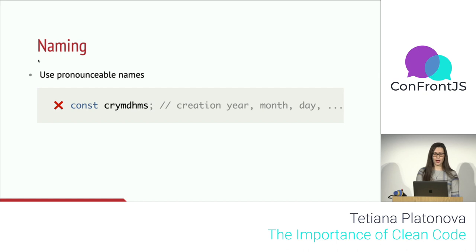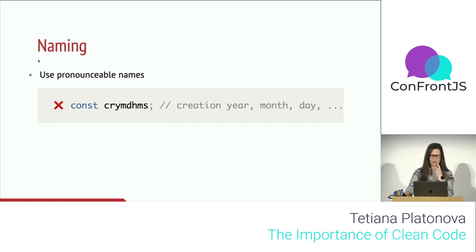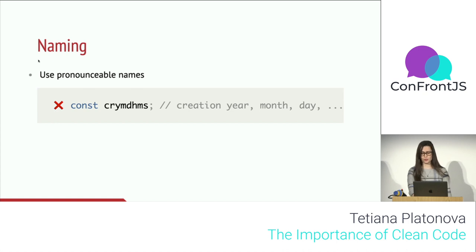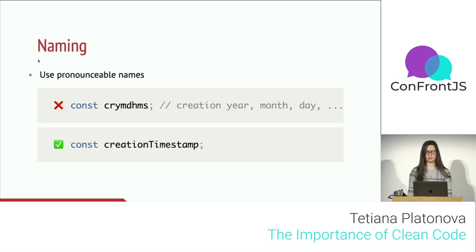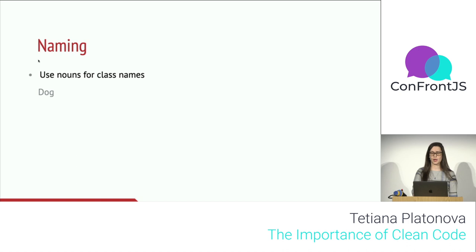On pronounceable names: if you look at a variable name and the first feeling is that a cat ran over the keyboard, that's a sign it needs work. You might look closer and see a pattern — day, month, minutes, seconds — suggesting it holds a timestamp, but the name makes no sense. Naming it 'creationTimestamp,' for example, would be a much better solution.